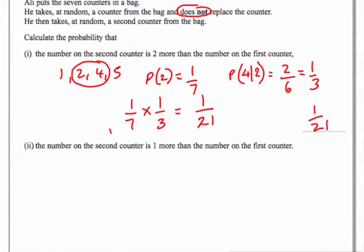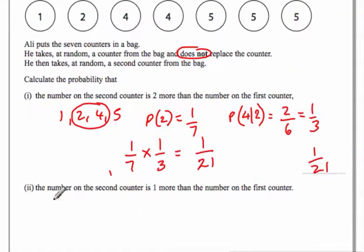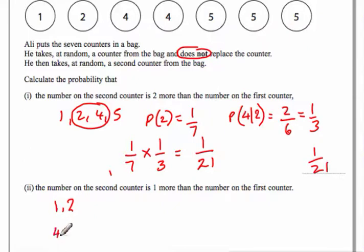The next part says the number on the second counter is one more than the number on the first counter, so now we've got to work out that probability. For this one there are a couple of possibilities — we could have a one followed by a two, or we could have a four followed by a five.